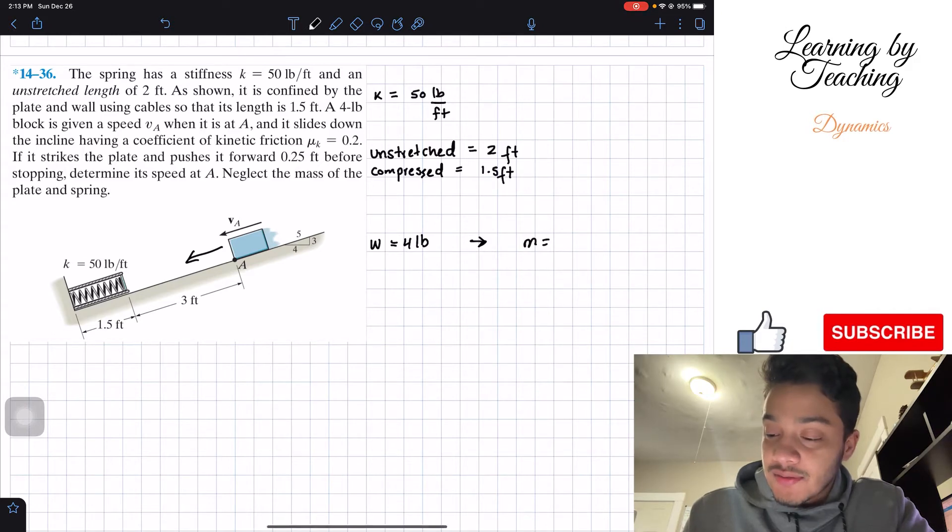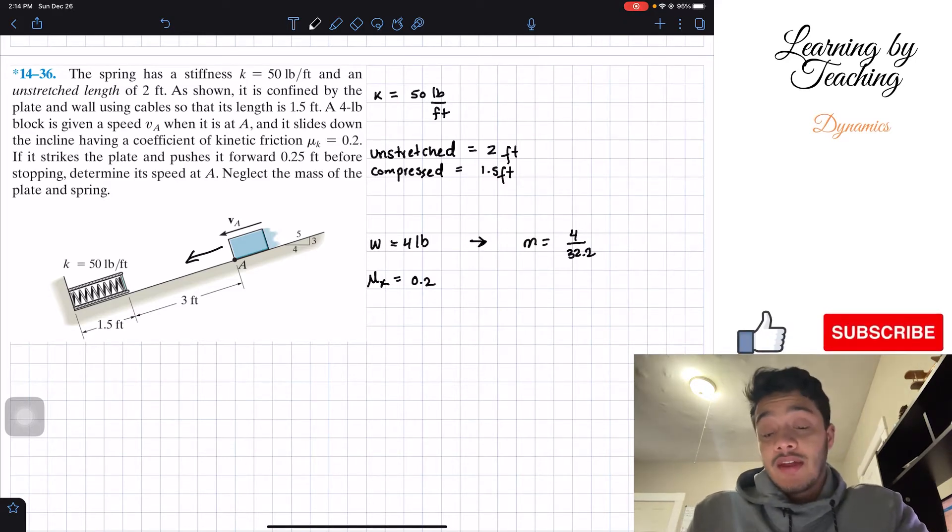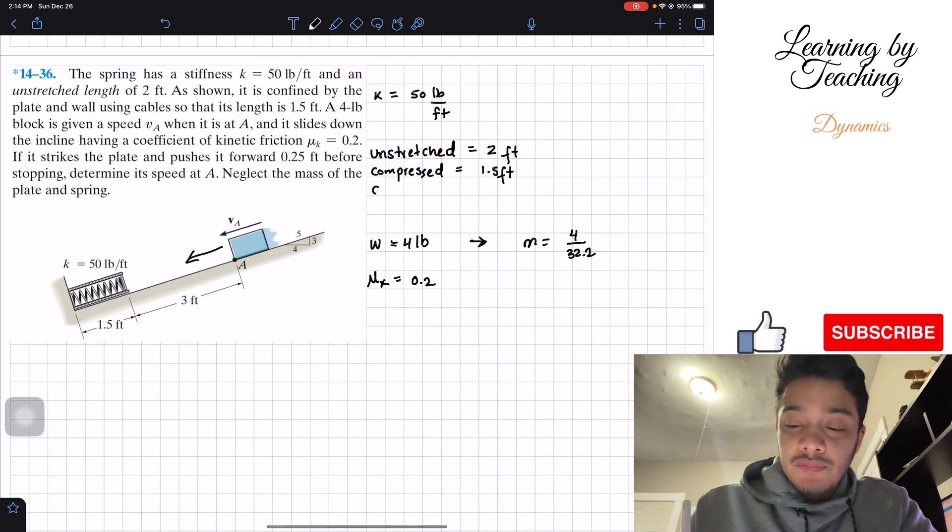Alright, we're given that the weight is equal to 4 pounds. And since we know the weight now, we can calculate that the mass is equal to 4 over 32.2, which is basically just gravity in English units. We're given mu_k which is equal to 0.2.